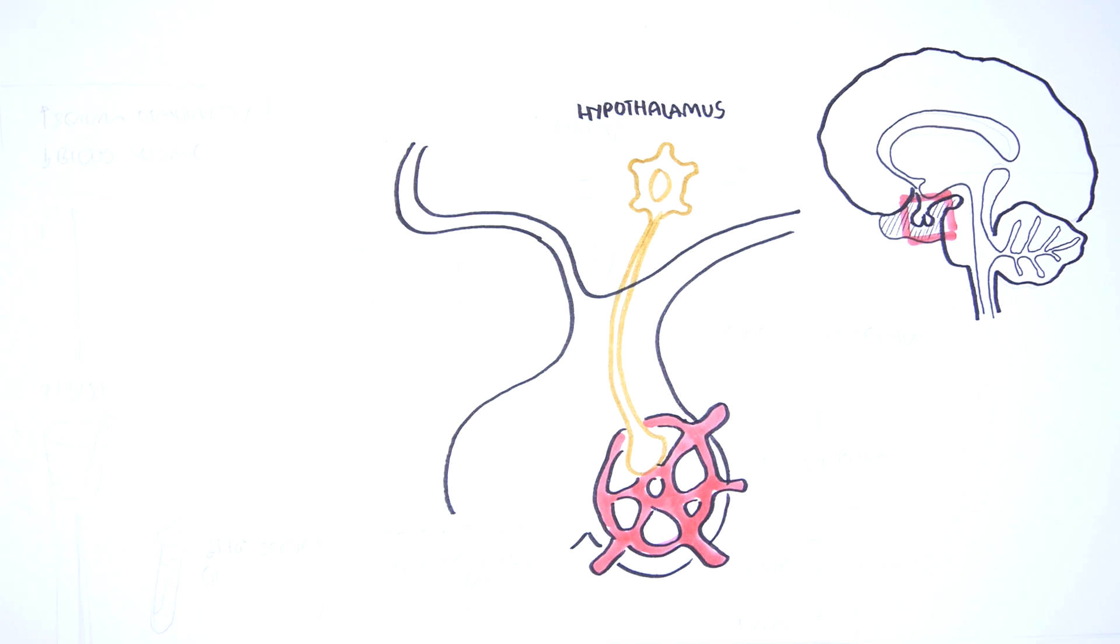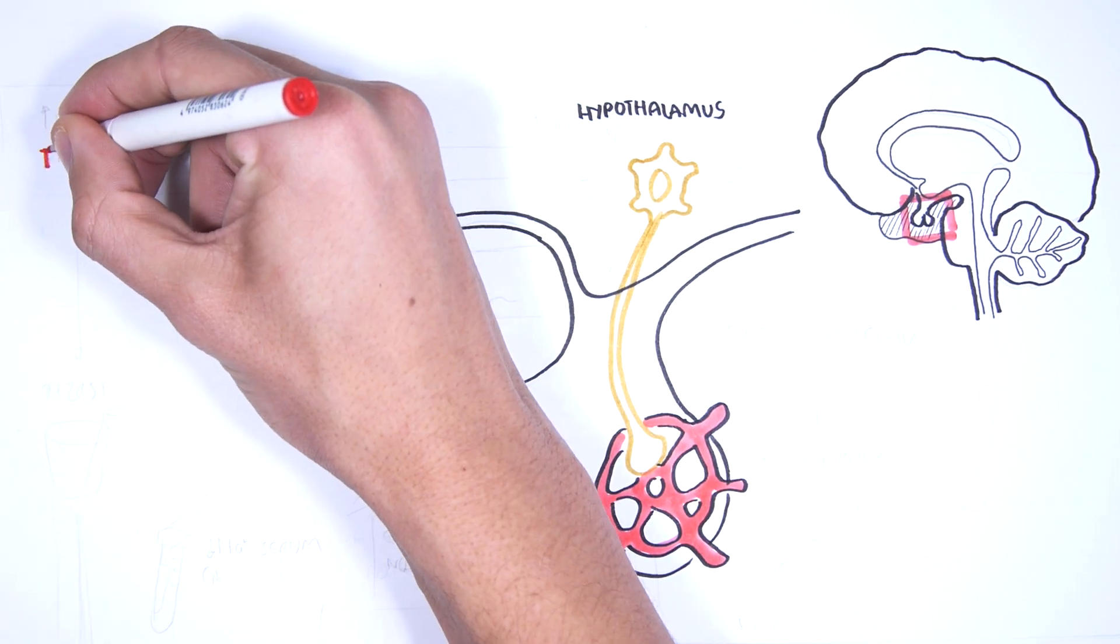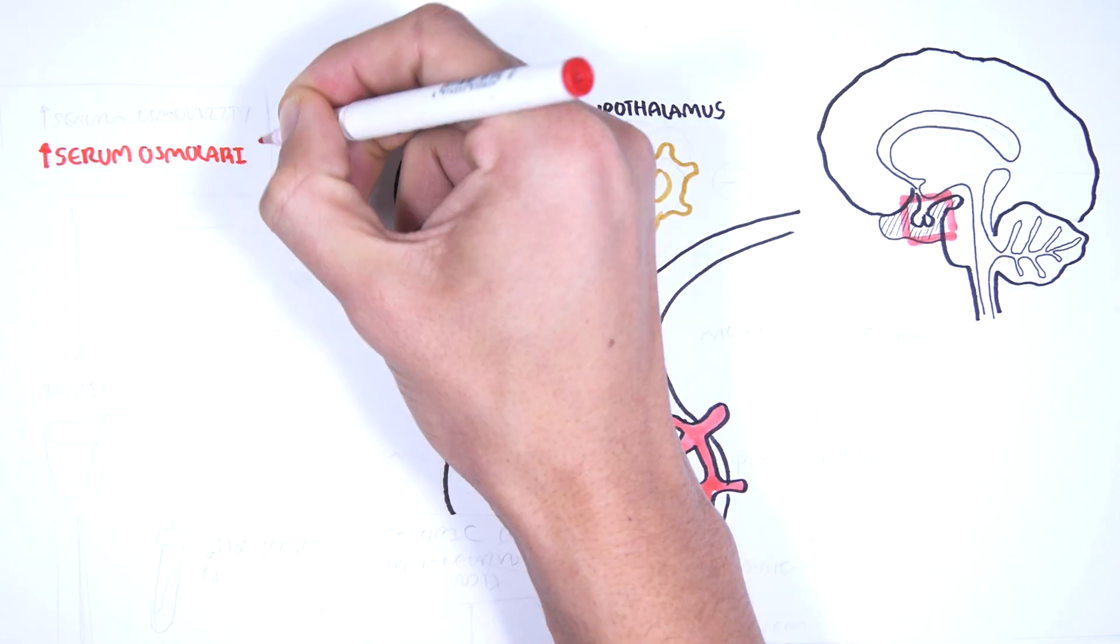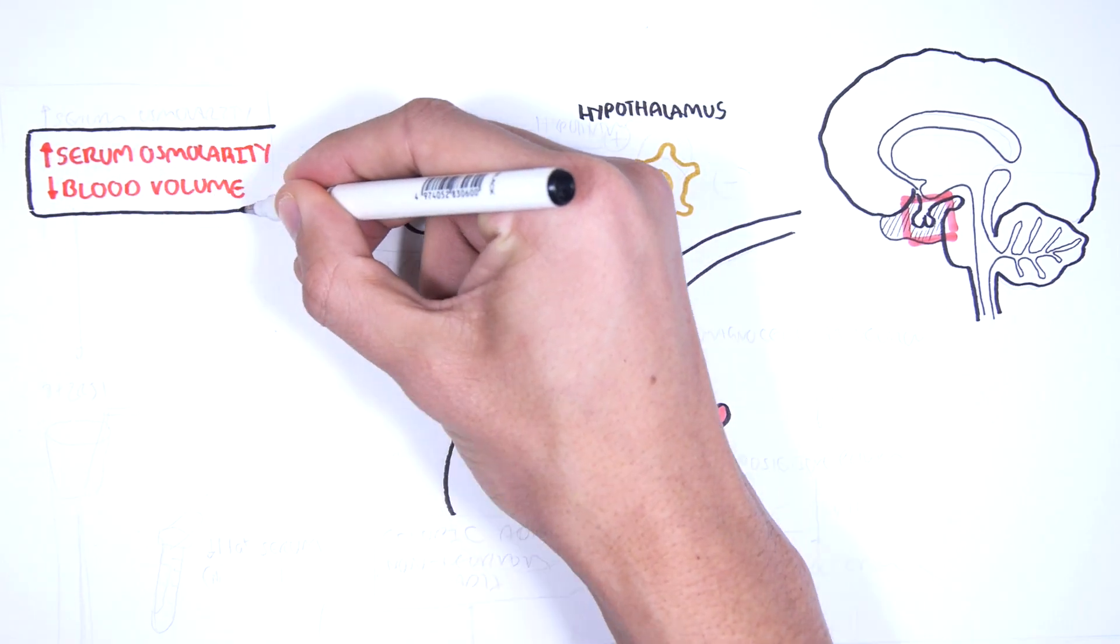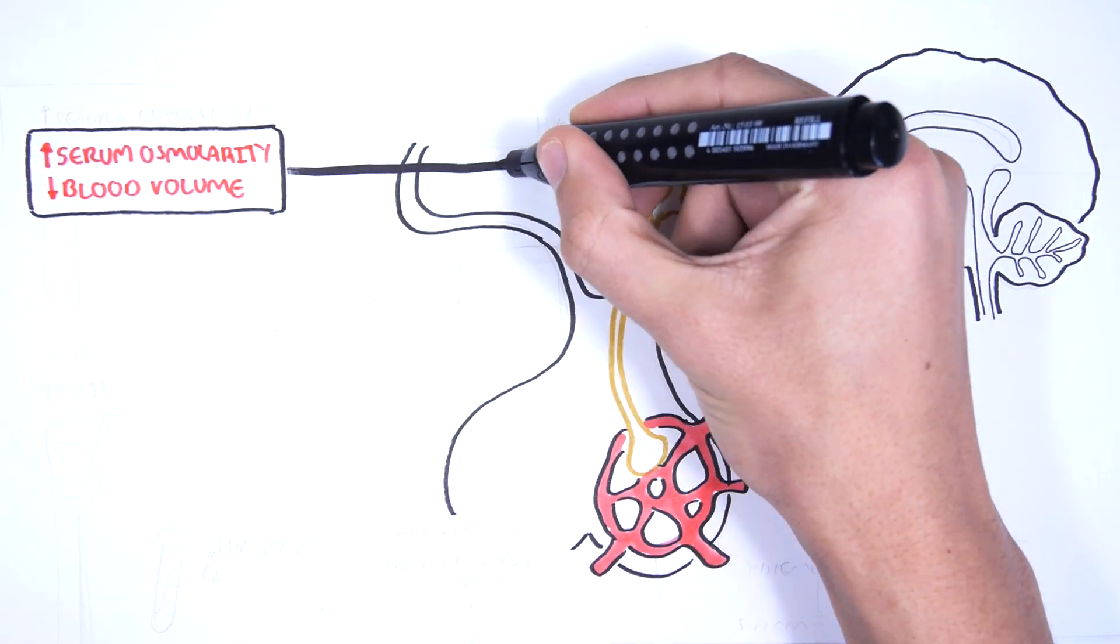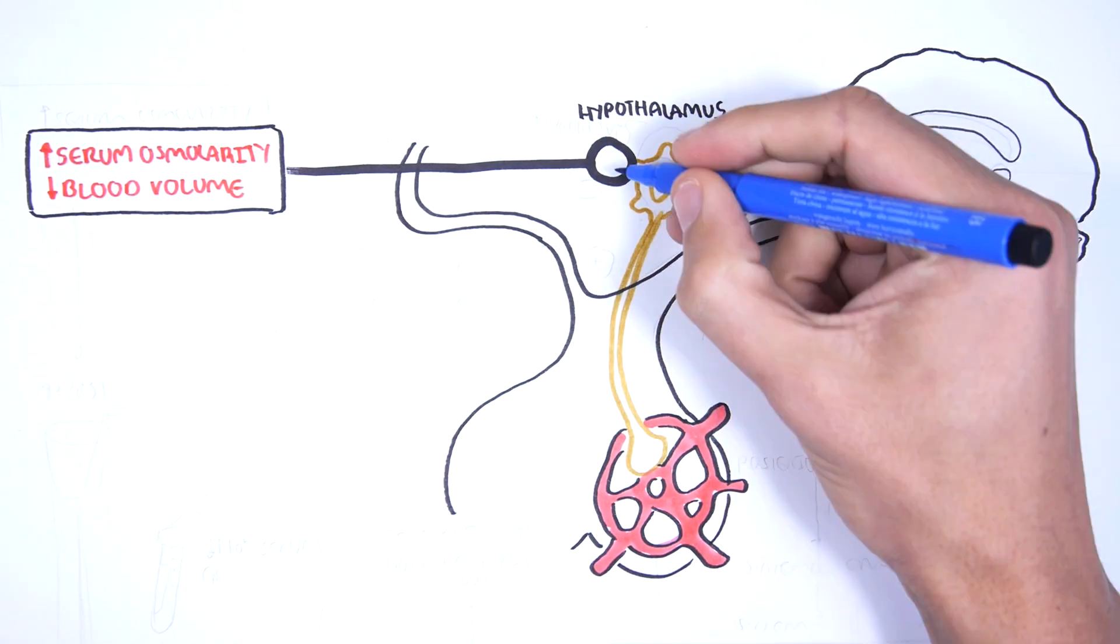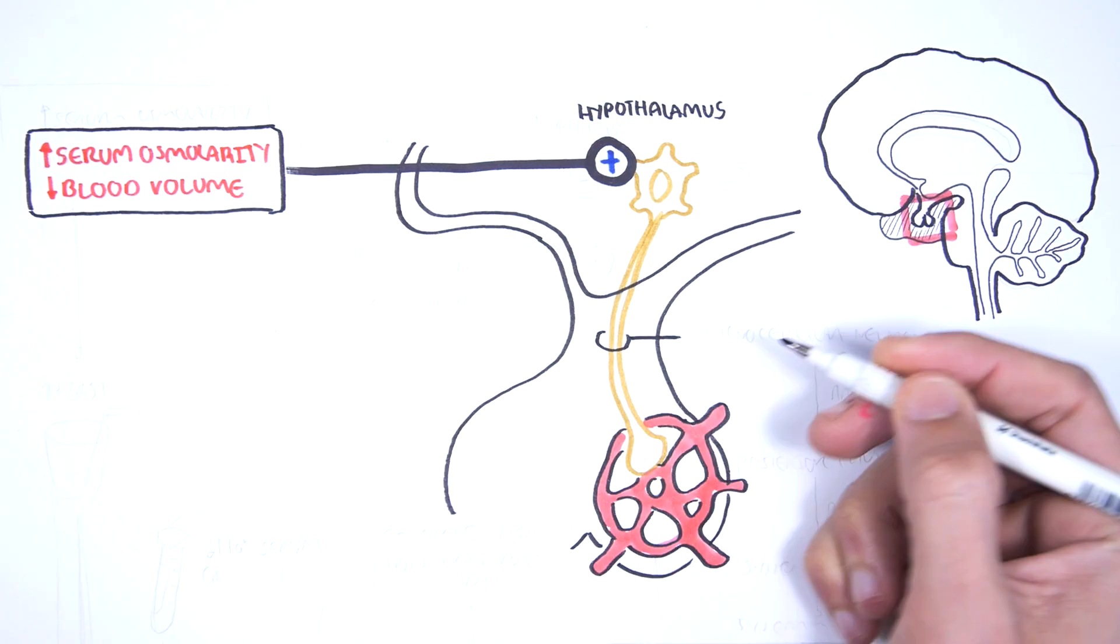ADH, also known as arginine vasopressin, is one of the neuropeptides which are released into circulation. An increase in serum osmolarity or a decrease in blood volume will stimulate the hypothalamus to produce antidiuretic hormone, also known as ADH.